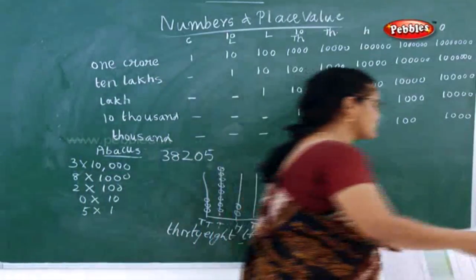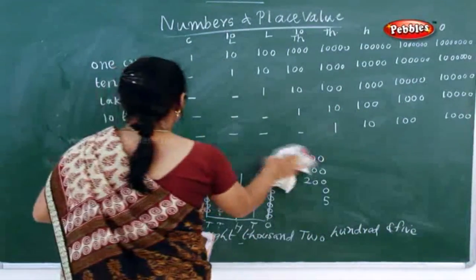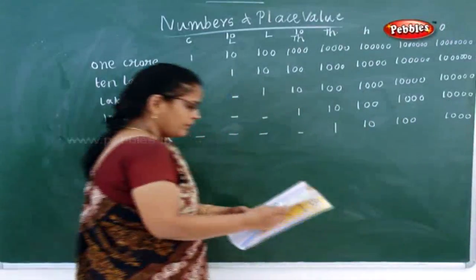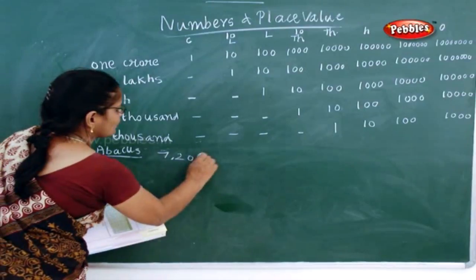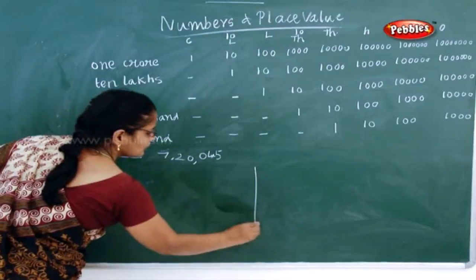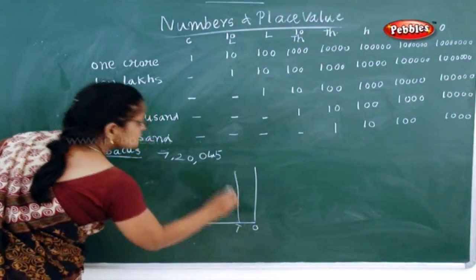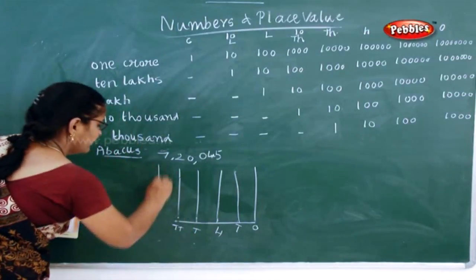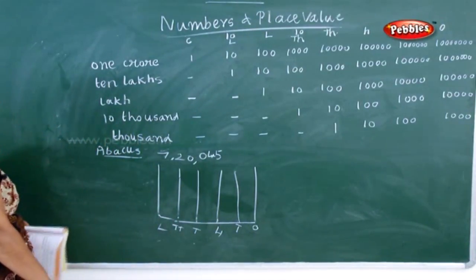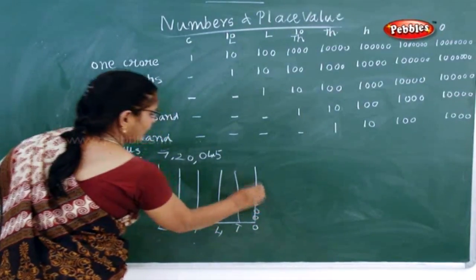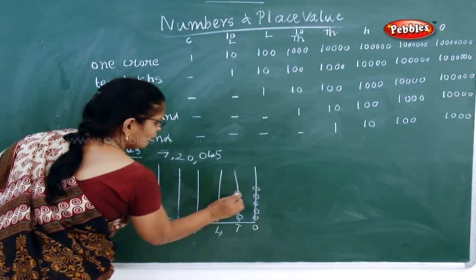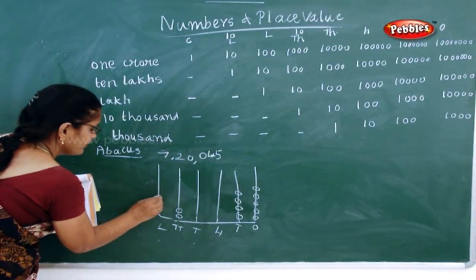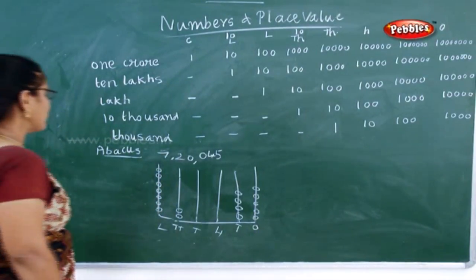Next sum: 7,20,045. Next abacus — you have to do the sum. 7,20,045. Now how will you do this? Same way: ones, tens, next one is one hundred, next one is one thousand, next one is ten thousand, next one — after ten thousand what is it? It is lakhs. Now how many rings will you draw here? One, two, three, four and five. Now here four: one, two, three, four. Now here nothing. Here also nothing. Here it is two: one, two. Here it is seven: one, two, three, four, five, six and seven.